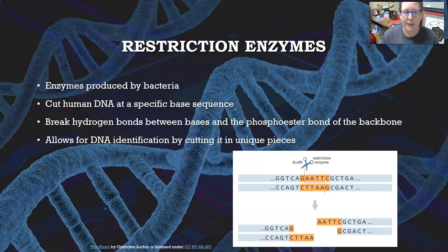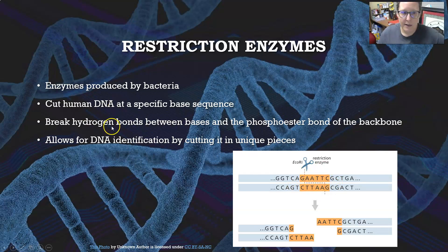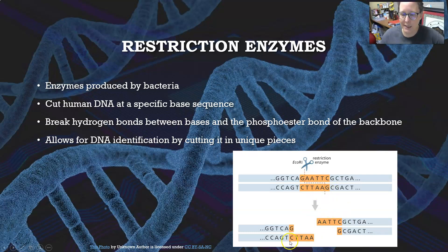Restriction enzymes are enzymes produced by bacteria that can cut human DNA at a specific base sequence. They look for palindromes — a sequence that reads the same way forward as backward in the complementary chain — and break the hydrogen bonds between the bases and the phosphoester bond of the backbone. For EcoRI, the cut is between the G and A, making two ends that can stick back together. If you use the same restriction enzyme to cut DNA in a different type of cell, you can take a gene from one cell and add it to another.